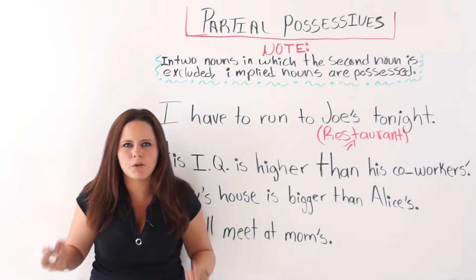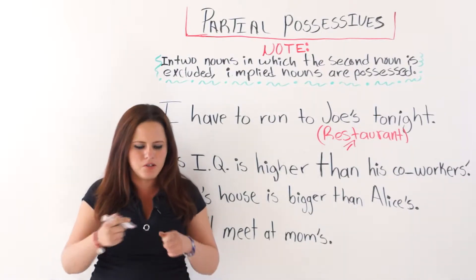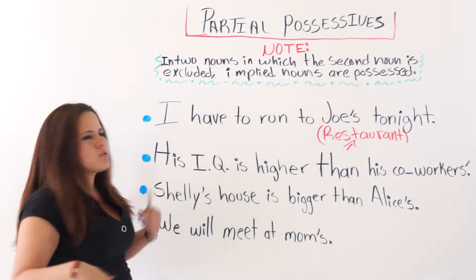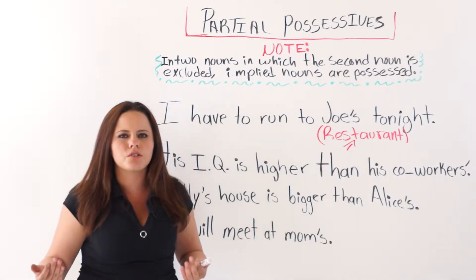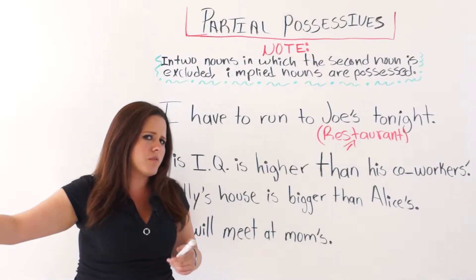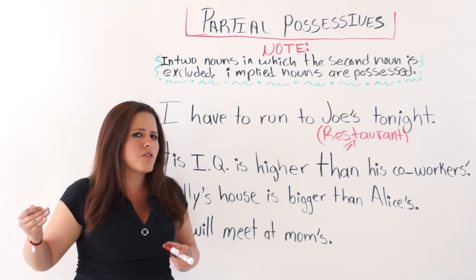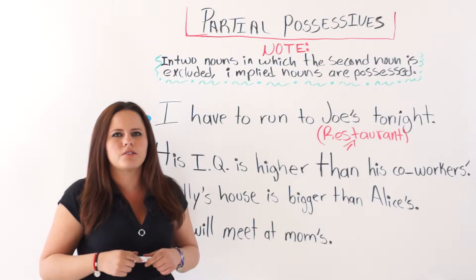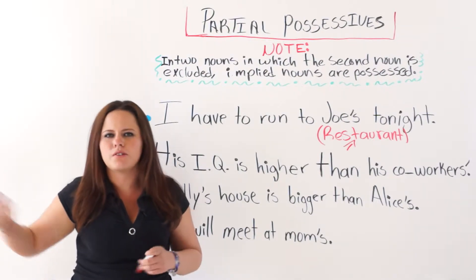You can imply it by using partial possessives. In English spoken language, we use partial or incomplete possessives all the time. For example: I have to run to the doctor's, instead of saying I have to run to the doctor's office. So the implied noun is 'office.' The implied noun is being possessed by the doctor — I am going to run to the doctor's office.